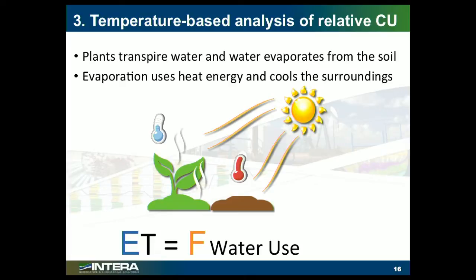The next step up is to take advantage of the temperature band in Landsat. In this example, we were interested in the relative consumptive use of flood irrigation versus drip irrigation — looking at irrigation efficiency. The basic concept is that during evapotranspiration, as plants consume water, that consumes energy and drops the temperature down. So irrigated fields are in general going to be cooler than bare dirt. That temperature differential can tell us something about how much water is being used in a given field.